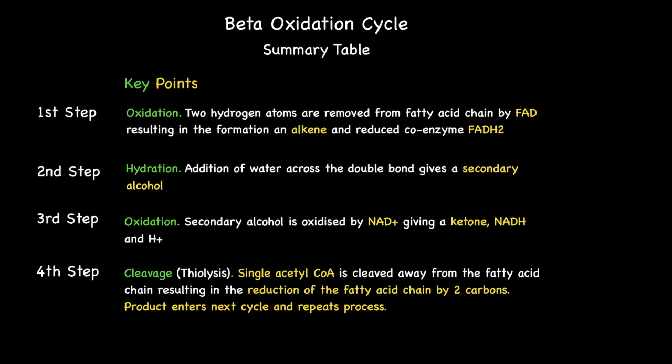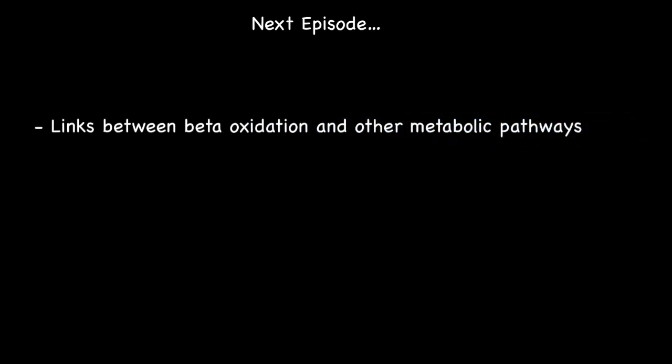While this holds true for most of the cycles of beta oxidation involving the fourth step, the final cycle produces two acetyl CoAs as opposed to just the one. In my next episode I'll be looking at the links between the products of beta oxidation and other metabolic pathways. I'll also be providing you with a list of specially designed questions to help you consolidate the information delivered from all three episodes.